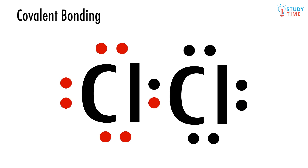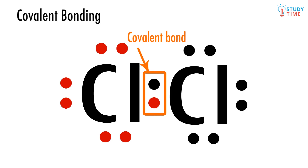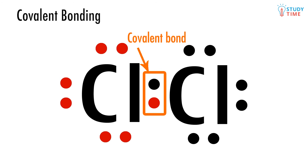So do you see what's happened here? Each chlorine atom has shared a single electron with its partner, and they've wound up both having a full shell. Those two electrons being shared in the middle are called a covalent bond. Covalent bonding is what allows chlorine, water, carbon dioxide, and thousands of other compounds to exist in the world. Without covalent bonding and electrons sharing, we couldn't swim, we couldn't drink, we couldn't breathe. We'd have a bit of a hard time.